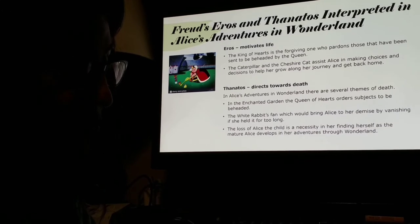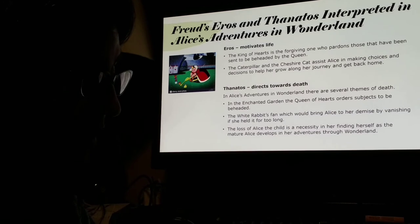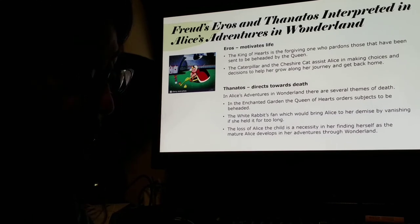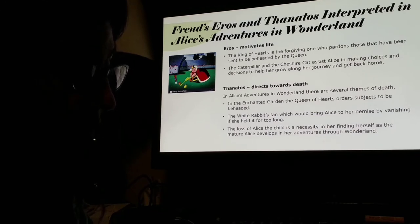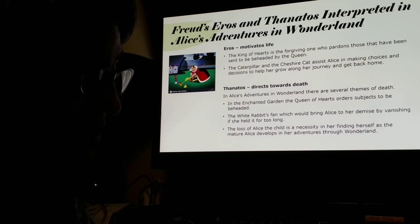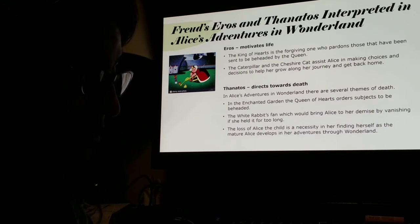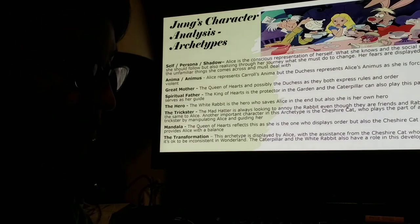Thanatos directs towards death. In Alice's Adventures in Wonderland there are several themes of death: in the enchanted garden the Queen of Hearts orders subjects to be beheaded, the White Rabbit's fan would bring Alice to her demise by banishing her if she held it too long, and the loss of Alice the child is a necessity in her finding herself as the mature Alice develops in her adventures through Wonderland.